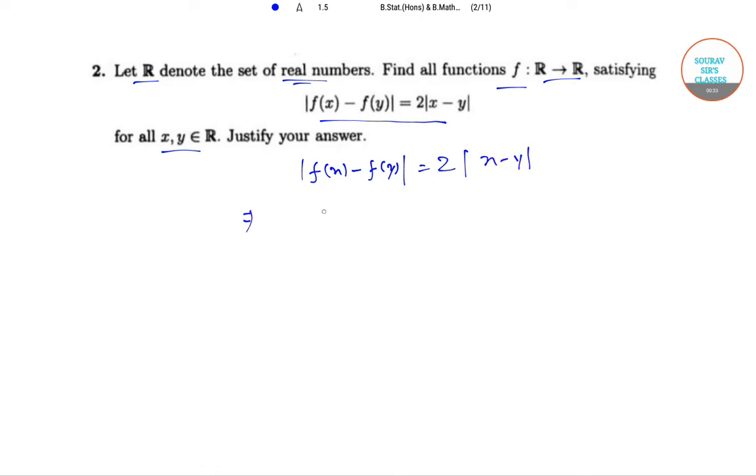Now dividing both sides by |x - y|, we have |f(x) - f(y)| / |x - y| = 2.